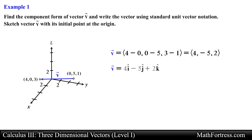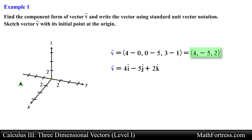Finally we need to sketch this vector in standard position, so we start at the origin and use the components to plot the coordinates of the terminal point. We move 4 units along the positive x-axis, 5 units along the negative y-axis, and 2 units along the positive z-axis. Then we join these two points with a directed line segment.